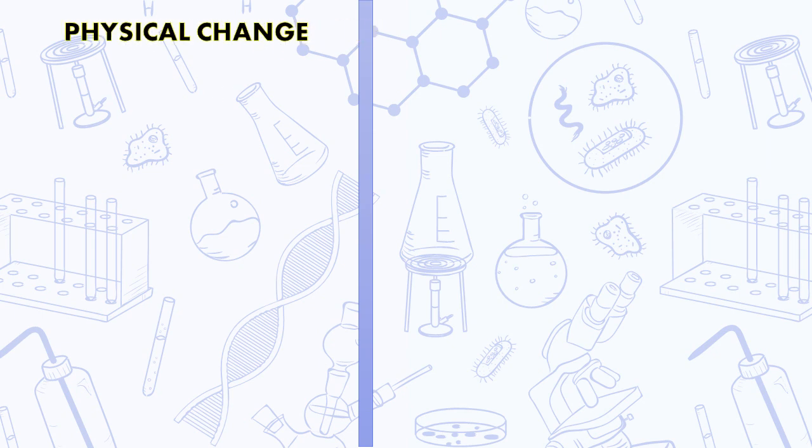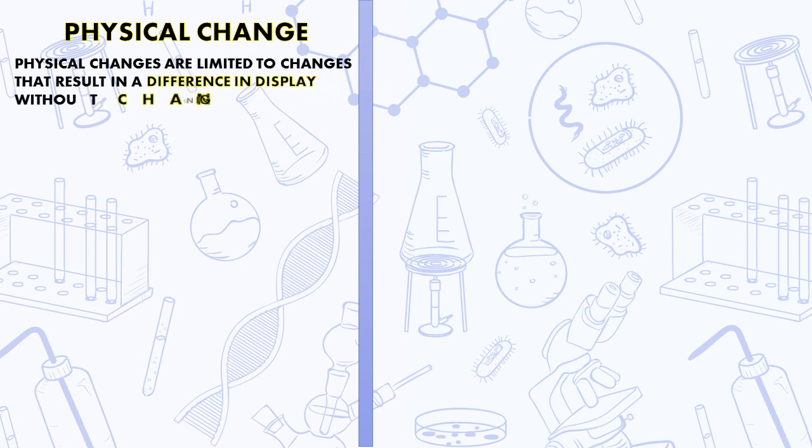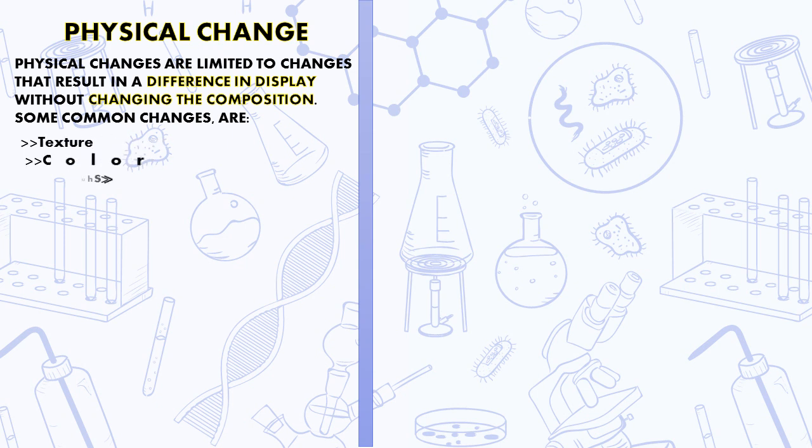We all know what is a physical change. A physical change is limited to changes that result in difference in display without changing the composition. Some common changes which show us physical change are change in texture, color, shape, temperature, and change of state.